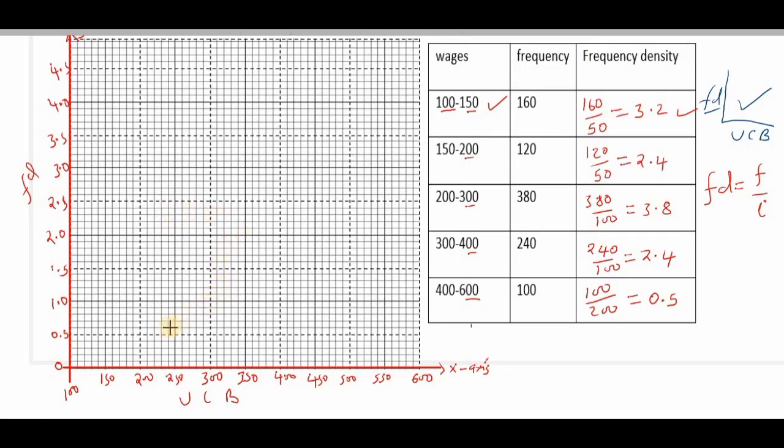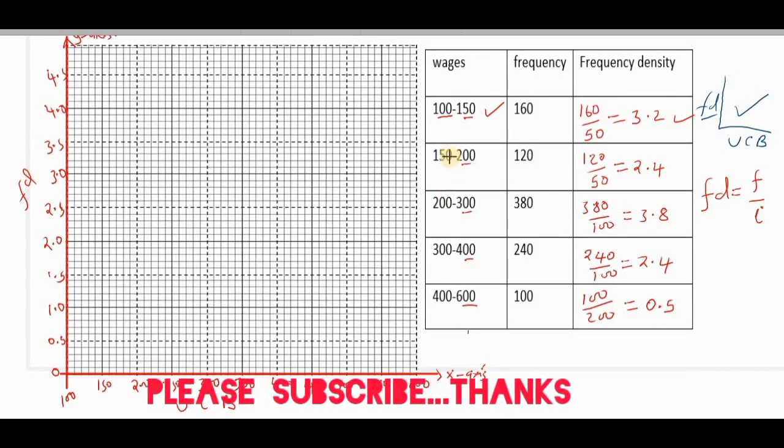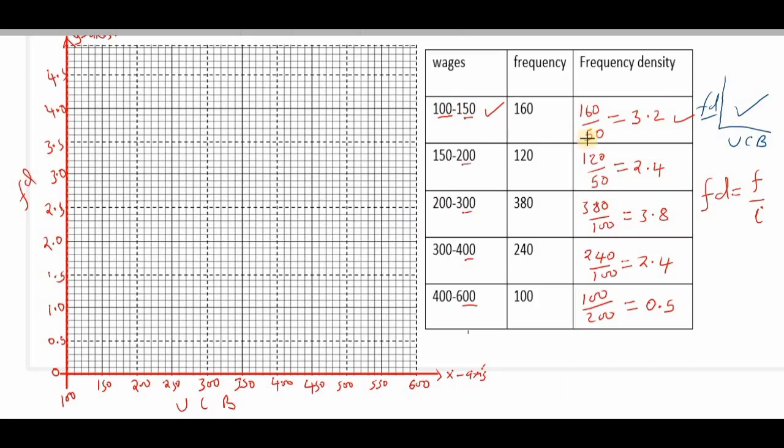The next thing will now be plotting. We will begin with the first class from 100 up to 150, the frequency density is 3.2. So we come to 3.2 right there. The next one runs from 150 to 200 and the frequency density is 2.4.